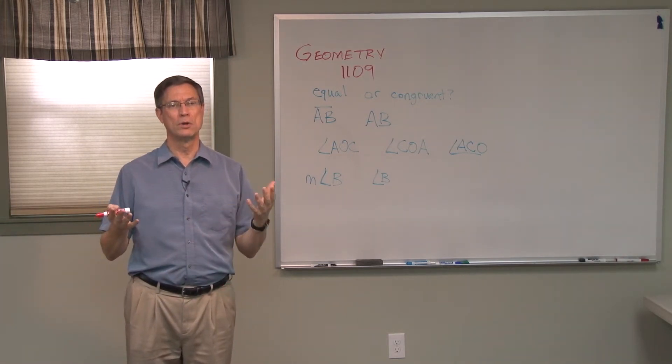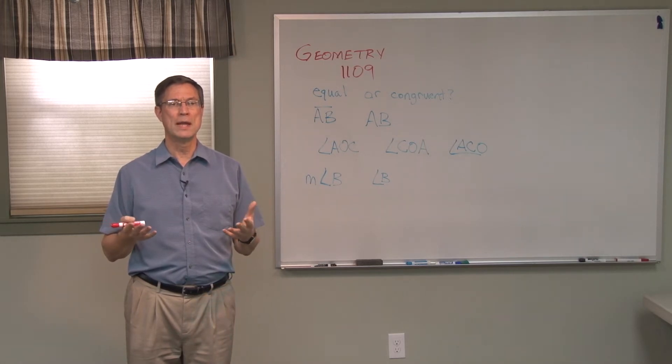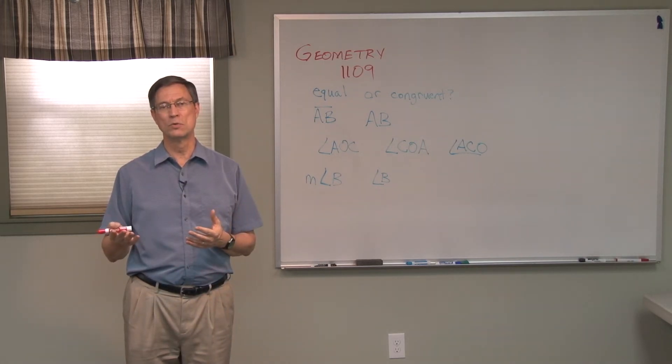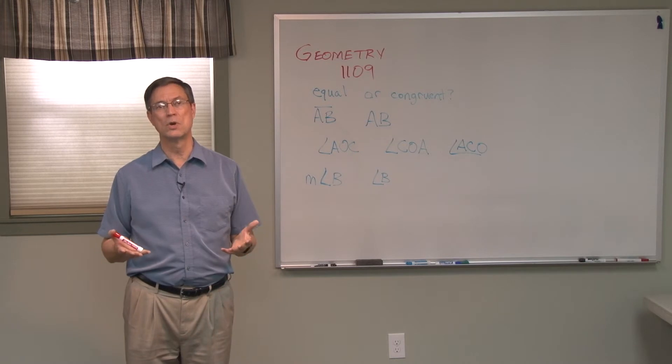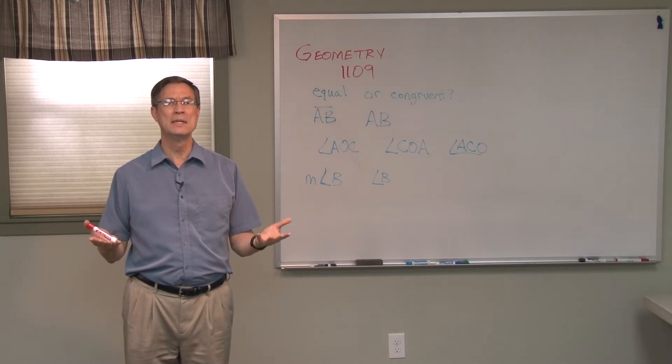The term equal refers to the numbers that are used to measure it. So an angle might be 66 degrees, so we would talk about this angle being equal to this angle. We say two right triangles are equal, so they're both 90 degrees.